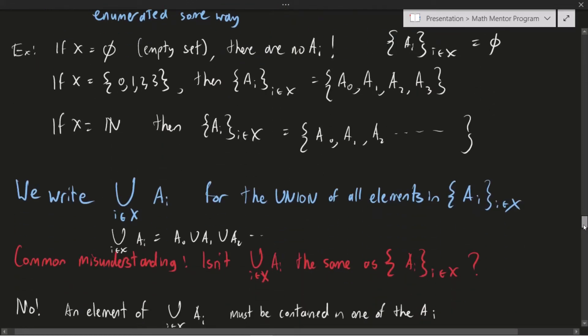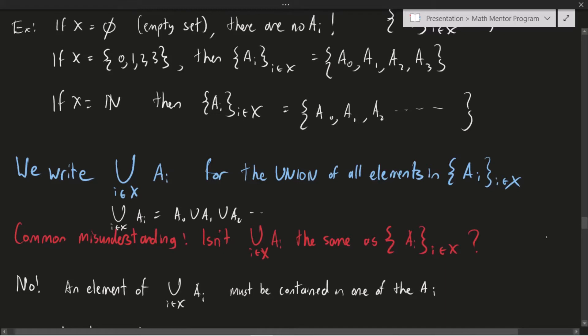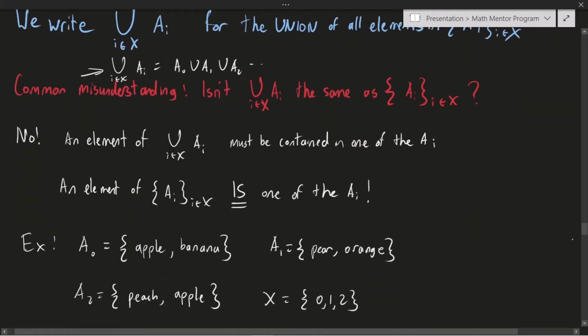So now we can talk about the big union notation, and all this does is generalizes the regular union that we know. So in general, we will write big U with i in X of Ai for the union of everything in the collection. So explicitly, I've written it down here, but more compactly, this is the notation that we will tend to use. Now, I want to address a very common misunderstanding with this, because people often confuse the big union notation with the collection. So you may wonder at first, what's the difference between the two? Well, isn't like the union of all the Ai same thing as the collection of all the Ai? There should not be a difference, right?